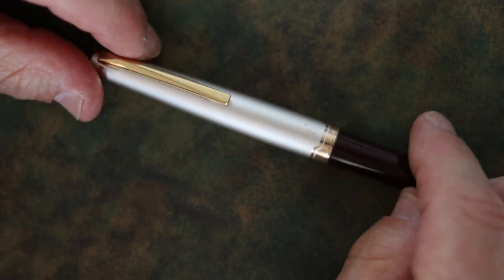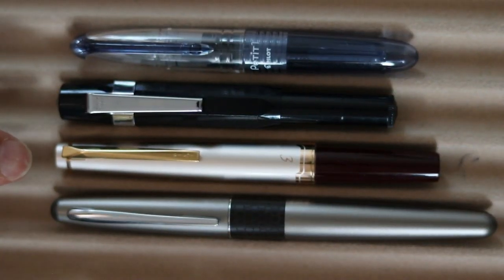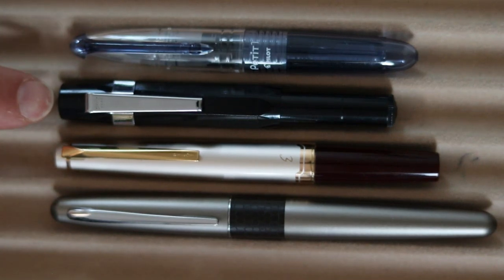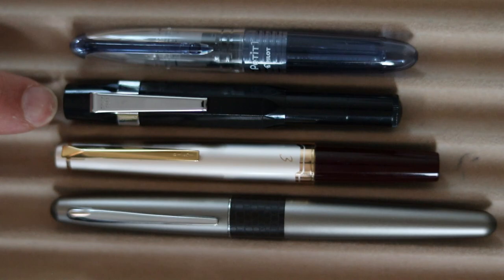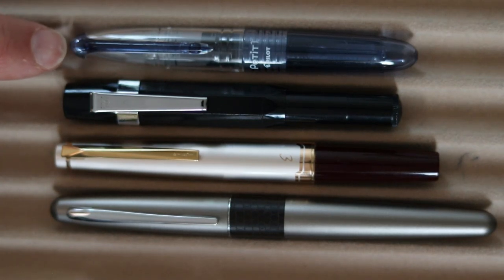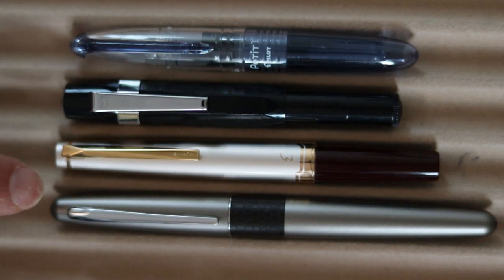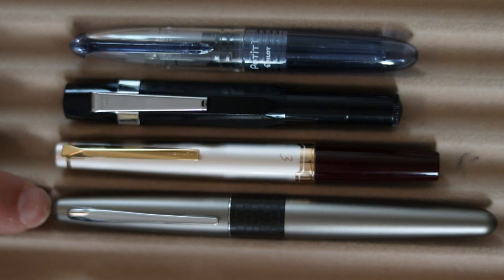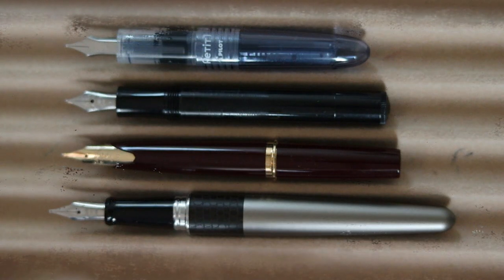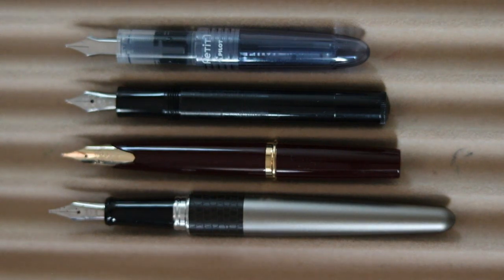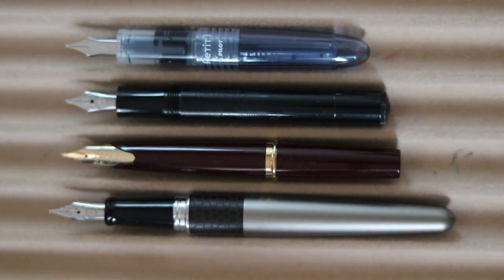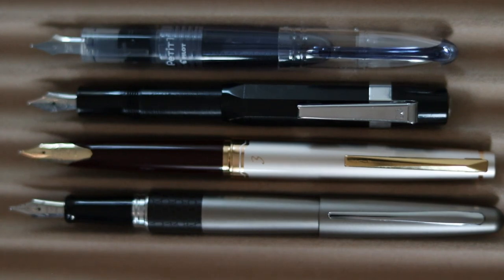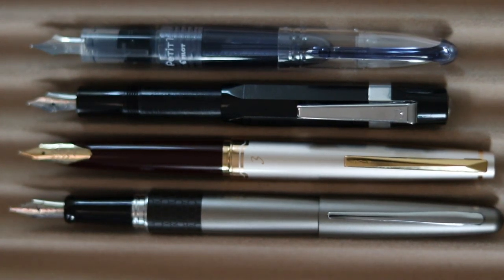How about some size comparisons? Here we have the Pilot E95S next to the Caveco Skyline Sport and the Pilot Petite. All three pocket pens and just for fun of it, I put it next to a Pilot Metropolitan. And here we have them uncapped. Nice stair step there. Even more. And here they are posted. Interesting sizes. These two are pretty close to the same. And the Caveco and the Petite are about the same.